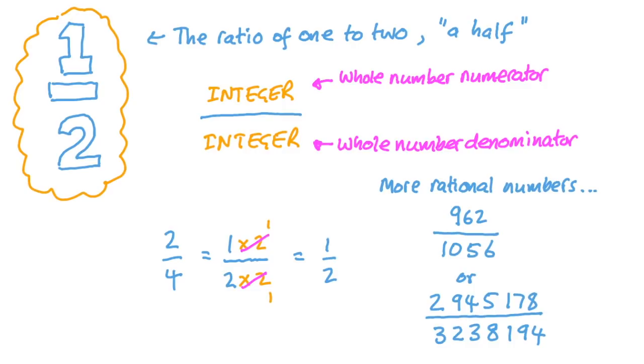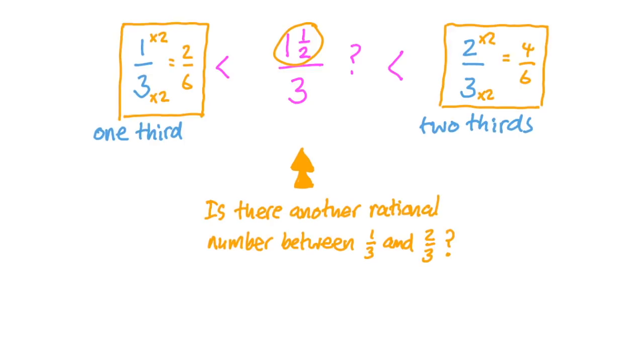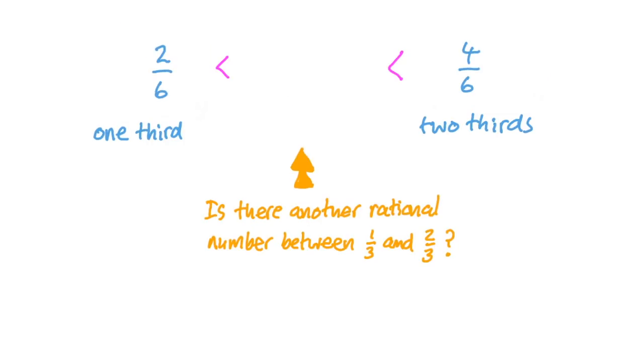Now, we can take any integer we like as the numerator and any other integer we like as the denominator to make a rational number. Let's take a look at a couple of rational numbers, one third and two thirds. Is there another rational number in between them in value? Well, one and a half thirds doesn't really count because one and a half isn't an integer. But an equivalent fraction to one third is two sixths, just double the numerator and denominator, and an equivalent fraction to two thirds is four sixths. So instead of one third and two thirds, we've got two sixths and four sixths, and it sort of leaps off the page that three sixths would be between them. And we could simplify that to a half by dividing the numerator and denominator by three.